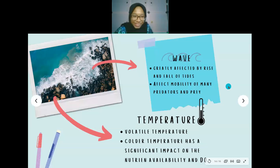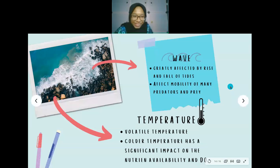Temperature around Rocky Shore areas is volatile — it can get very hot during afternoon. Colder temperatures have a significant impact on nutrient availability and dissolved oxygen levels, since water temperature affects the concentration of dissolved oxygen and available nutrients for organisms in the area.